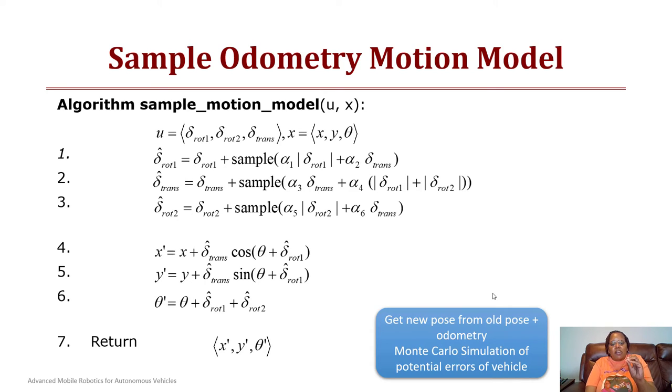So based upon this, we now have our sample values x prime, y prime, and theta prime. Basically you get the new pose from an old pose plus the odometry. This is also called the Monte Carlo simulation of potential errors of a vehicle.